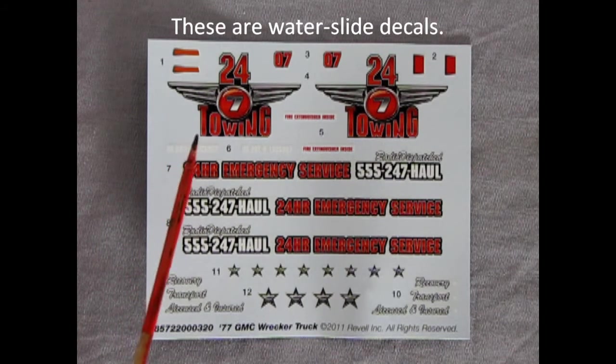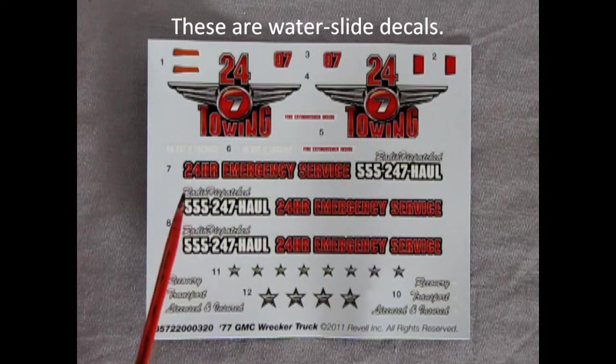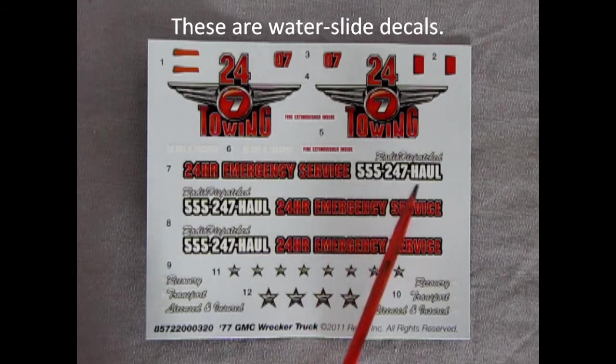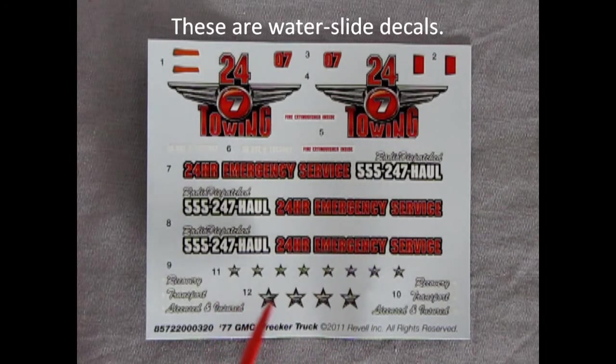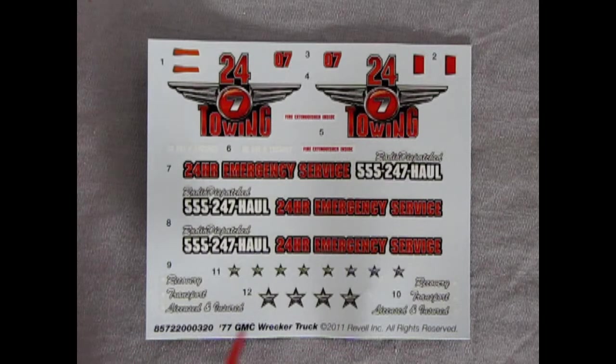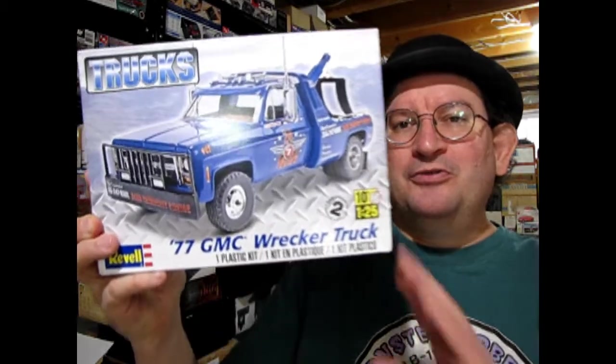Finally, here are the decals for our tow truck. As you can see, we've got the 24-7 towing symbol on the side, the 07 number here, then our 24-hour emergency services number and our phone number for our tow truck. And all these cool little stars and different names and other scripts on the side. A very cool looking decal sheet which will really dress up this model.